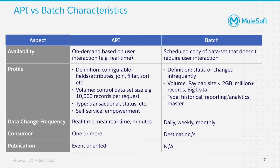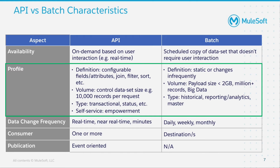There are a number of characteristics that APIs and batch have that differentiate them from each other, and these are important to understand when designing your applications. First, availability: APIs are on demand, real-time, and based on user interaction, while batch is a scheduled copy of a dataset and does not require direct user interaction. The profile of each also differs quite significantly. APIs have configurable fields and attributes that you can join, filter, and sort on, and are of much smaller controlled volume — for example, 10,000 records per request.